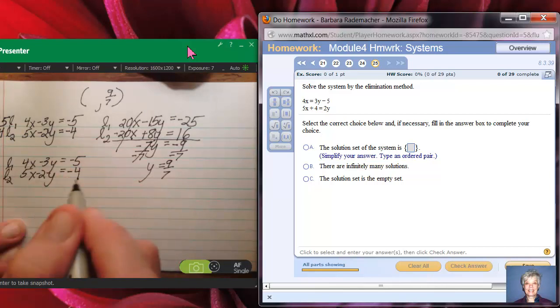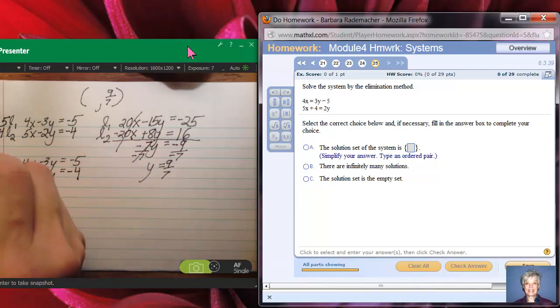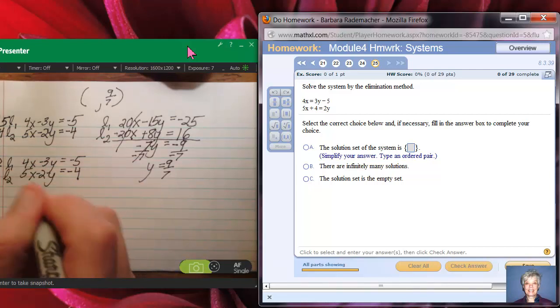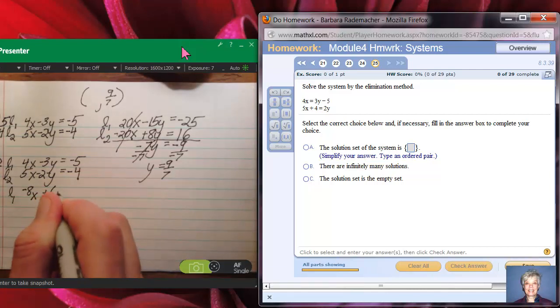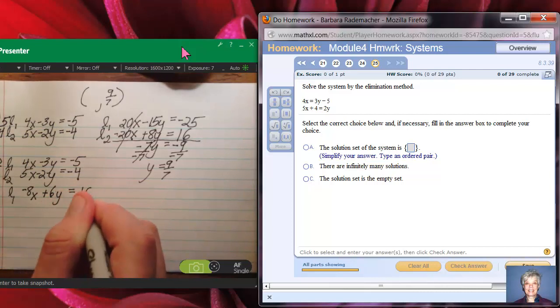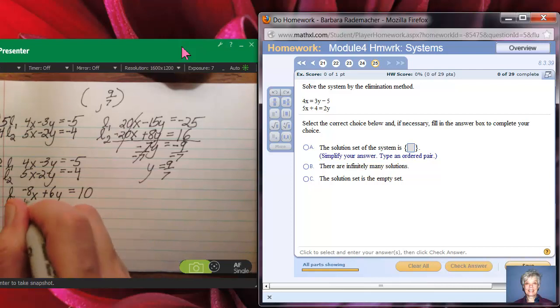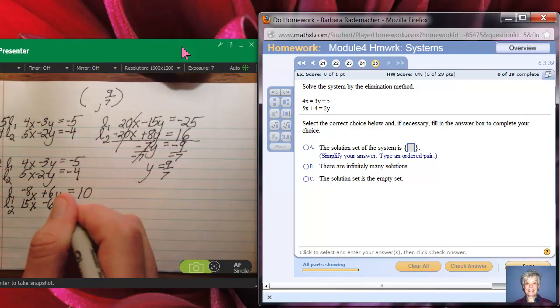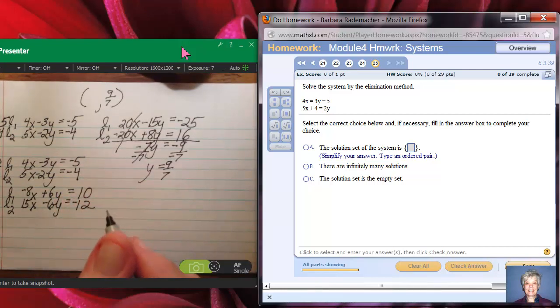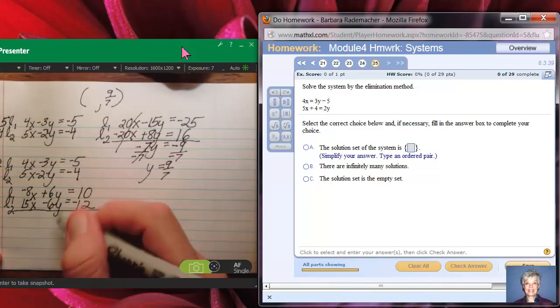Let's see, if I were to multiply the top line by negative 2, and the bottom line by positive 3, you don't have to do it exactly this way, but this is the idea. Line 1 would become negative 8x plus 6y equals positive 10, and line 2 would become 15x minus 6y equals negative 12. Well, for sure my y terms are going to zero out.